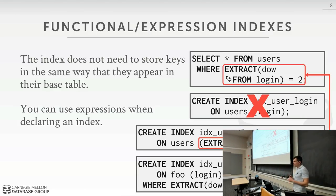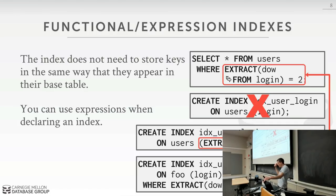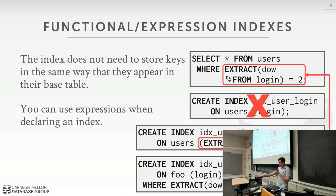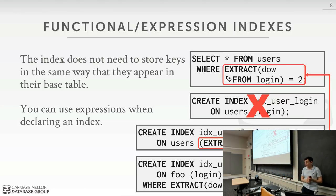If I change the predicate to Wednesday, it picks the expression index instead, because the partial index doesn't have any of that information. All of this uses the same storage information we talked about last class. There's nothing special because it's an expression - when inserting a record, the system runs that expression and inserts that as the key rather than the original attribute value.